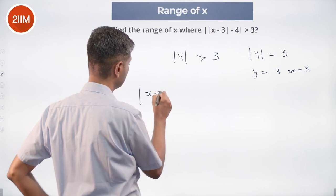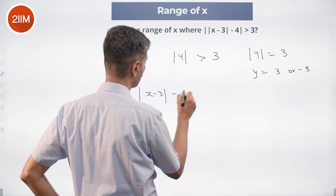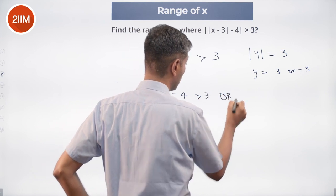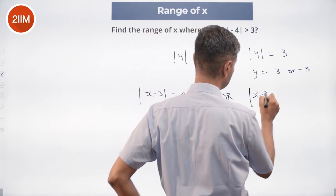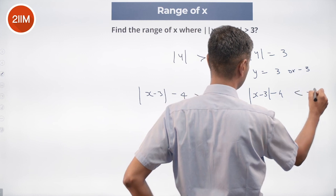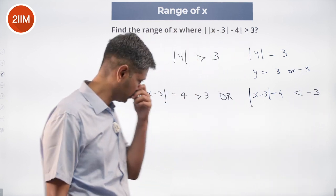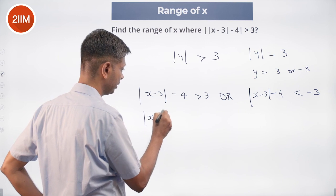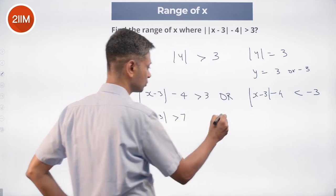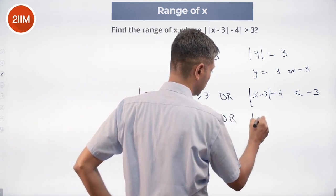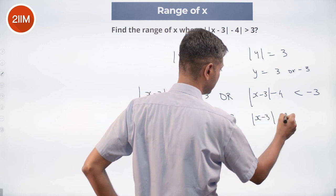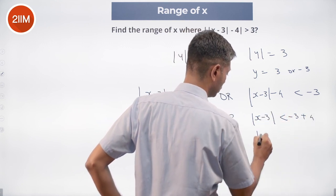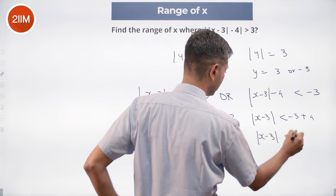So we look at modulus of (x minus 3) minus 4 is greater than 3, or modulus of (x minus 3) minus 4 is less than minus 3. This gives us modulus of (x minus 3) is greater than 7, or modulus of (x minus 3) is less than minus 3 plus 4, which means modulus of (x minus 3) is less than 1.